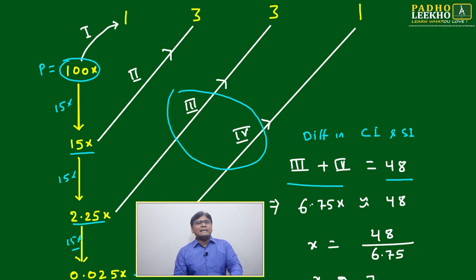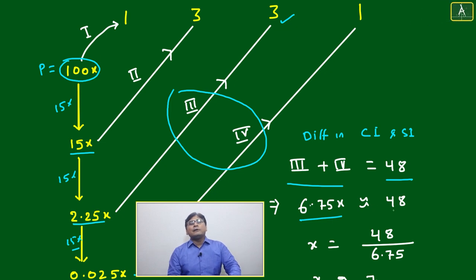We'll calculate based on the third line because the fourth will be negligible. 2.25x multiplied by 3 becomes 6.75x, which is almost equal to 48. I say almost because we haven't taken the fourth one into account.